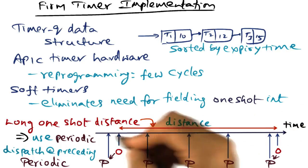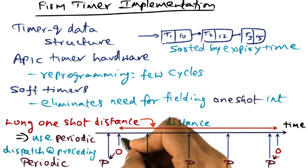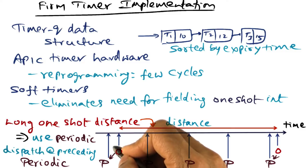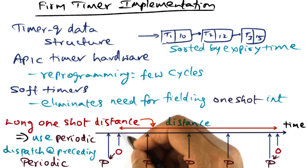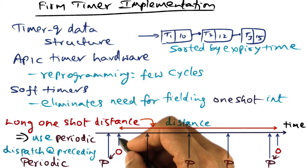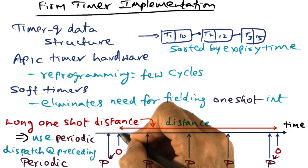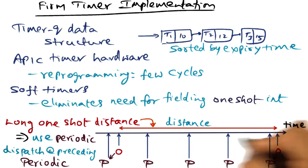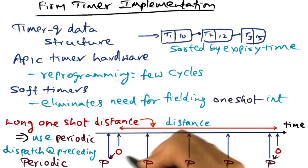Basically, when we have a long distance between one-shot events, we use a preceding periodic timer event so that we can both avoid the overhead of dealing with this one-shot event and also the cost of reprogramming it. In other words, we completely eliminate using one-shot events for situations where the distance is so big that we can simply use the periodic event instead.